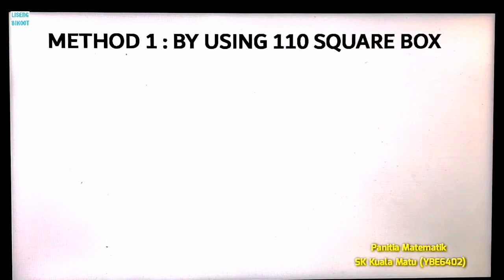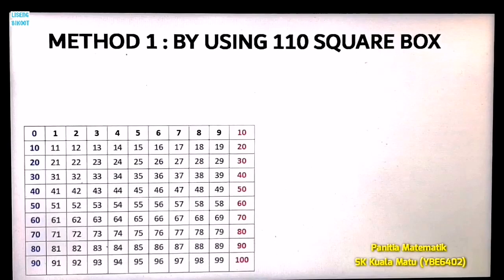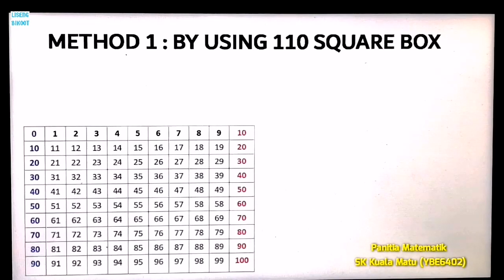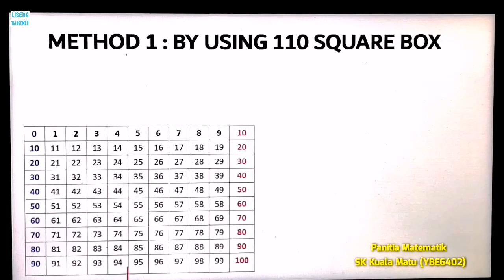Method one: using the 110 square box. First, draw the 110 square box, then fill in the numbers inside. Fill in numbers 0 up to 10 in the first row, numbers 10 up to 20 in the second row, numbers 20 up to 30 in the third row, and continue this process until number 100.